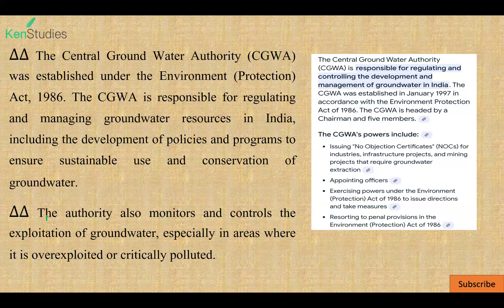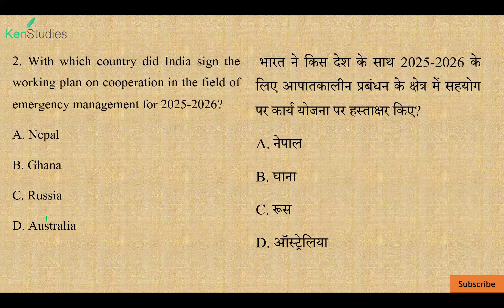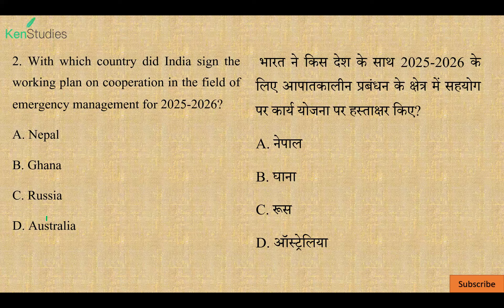Next question: Which country did India sign the working plan on cooperation in the field of emergency management for 2025 and 2026? Your options are Nepal, Ghana, Russia, or Australia.